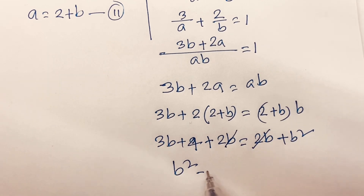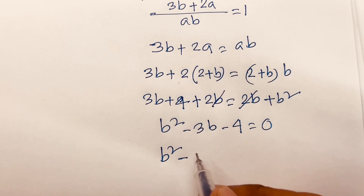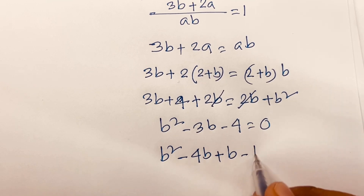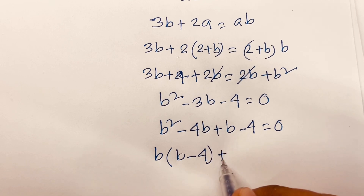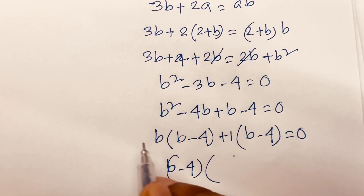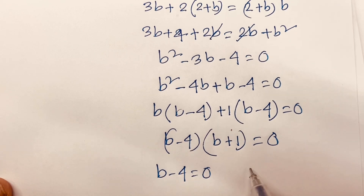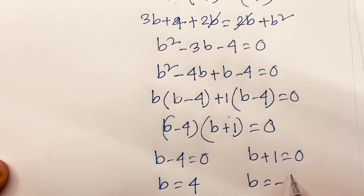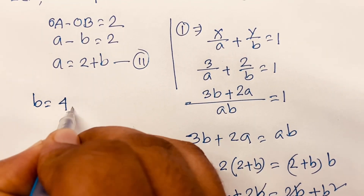This equation becomes b² - 3b - 4 = 0. Now I do factorization: -4 times 1 = -4 and -4 + 1 = -3, so we get (b - 4)(b + 1) = 0. There are two cases: b - 4 = 0 or b + 1 = 0, giving b = 4 and b = -1.